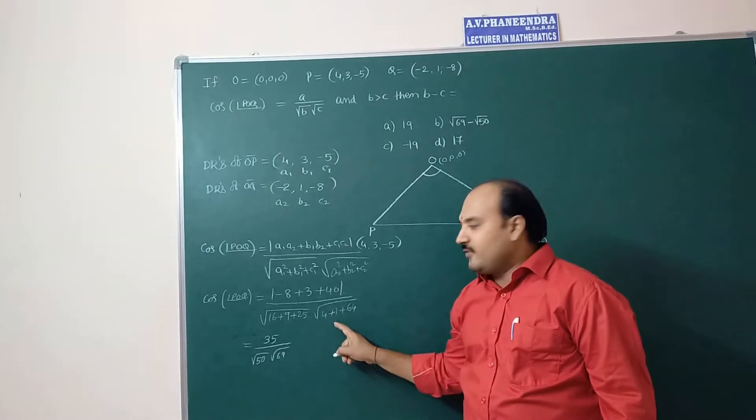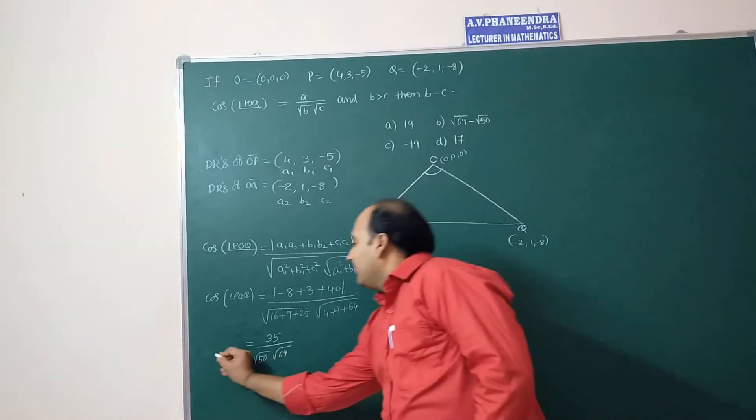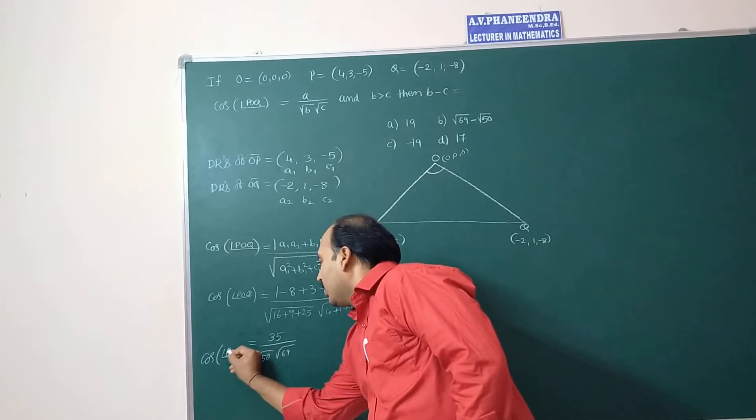Divided by square root of, divided by root 50 into root 69. 64 plus 165 plus 4, 69. This is cos of angle POQ.